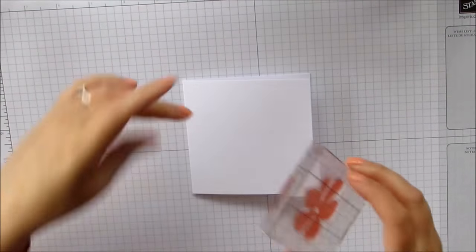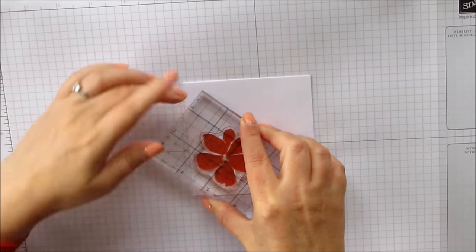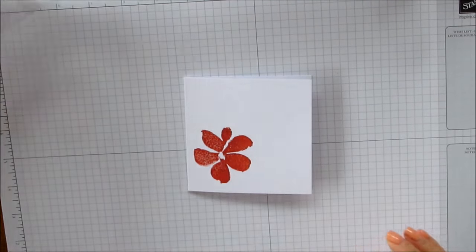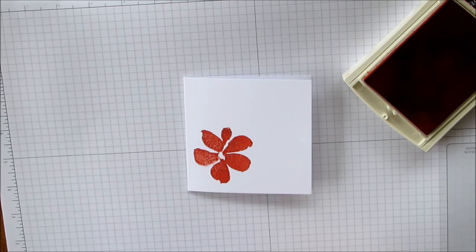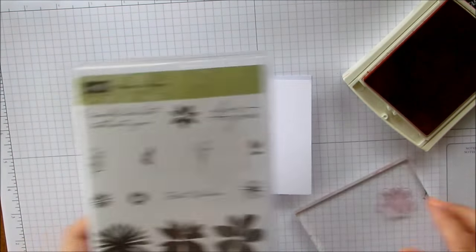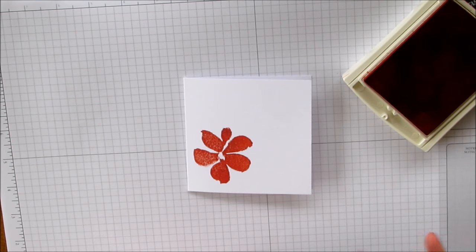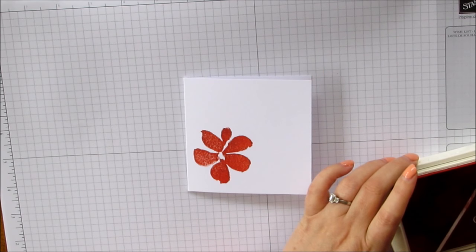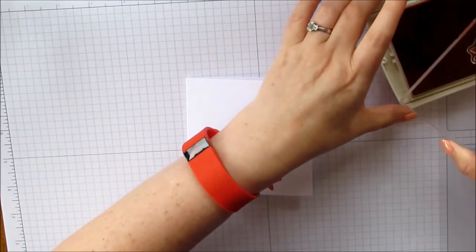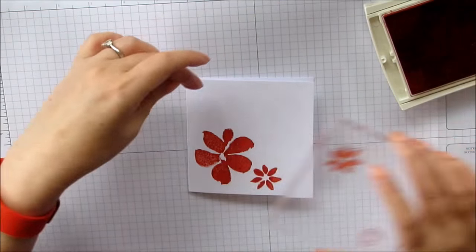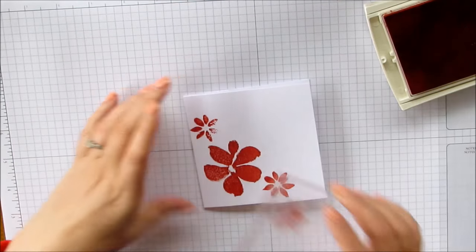I'm just going to pop it into this corner here. Move that to the side. And then still using the Calypso Coral, we're going to bring in this flower here. So just ink up our stamp. I'm going to come down to the side. And again, up to the top. What was that? Let's see if we can just line up.